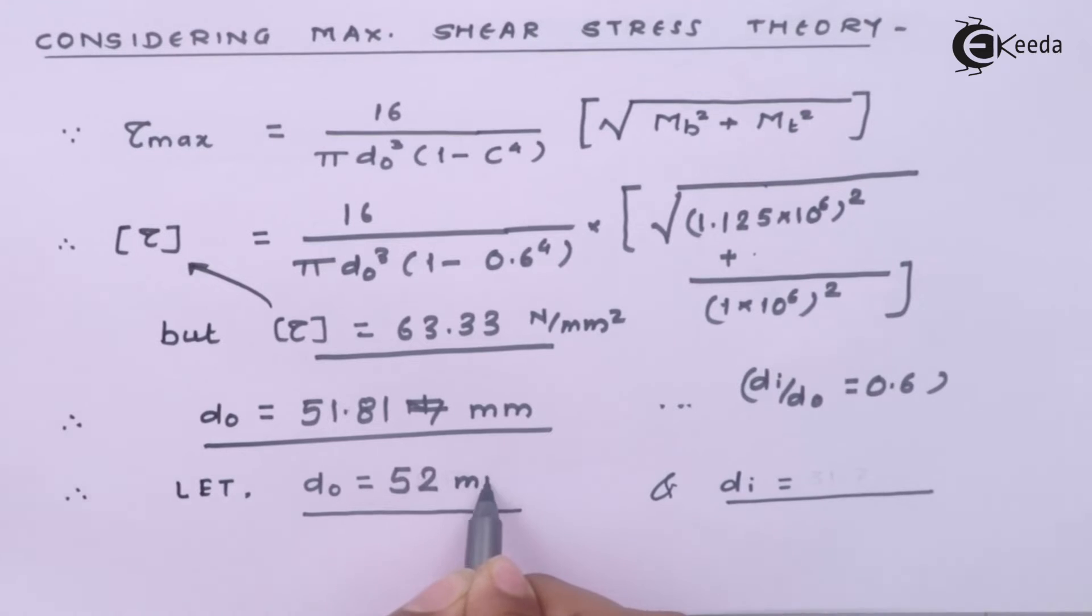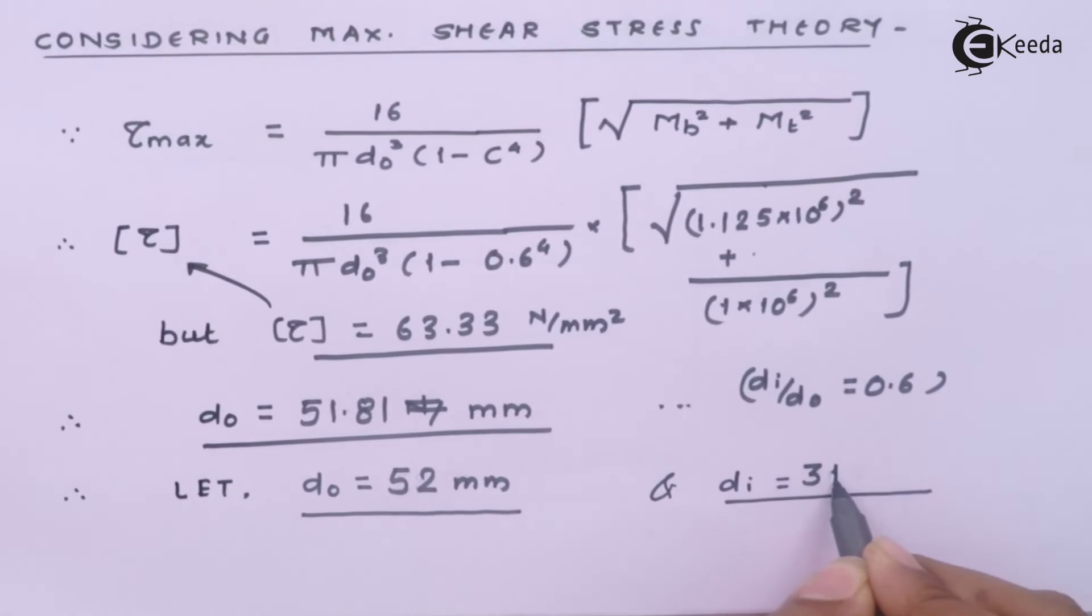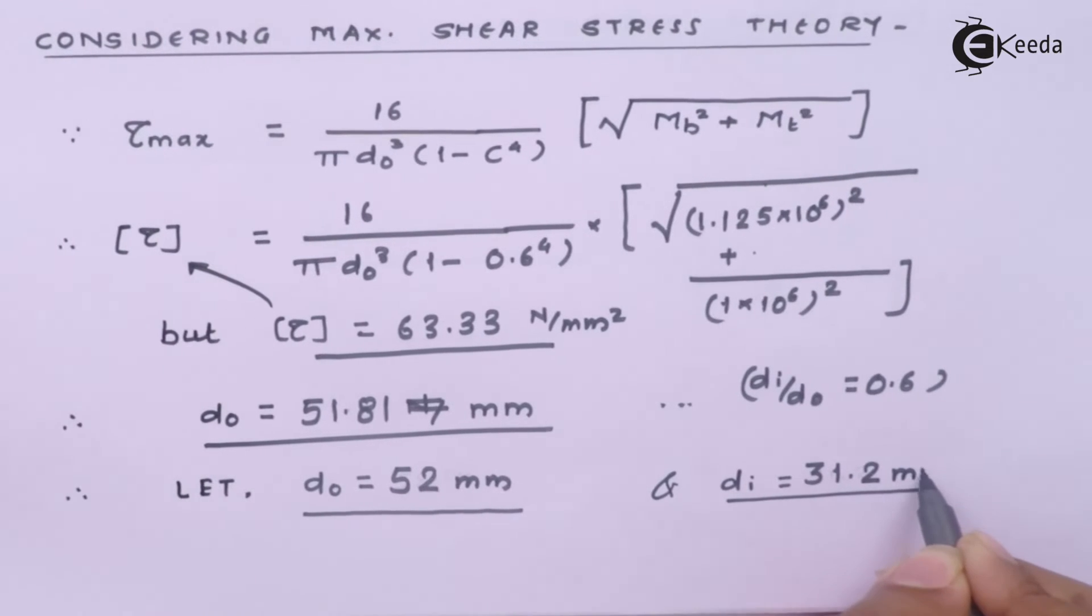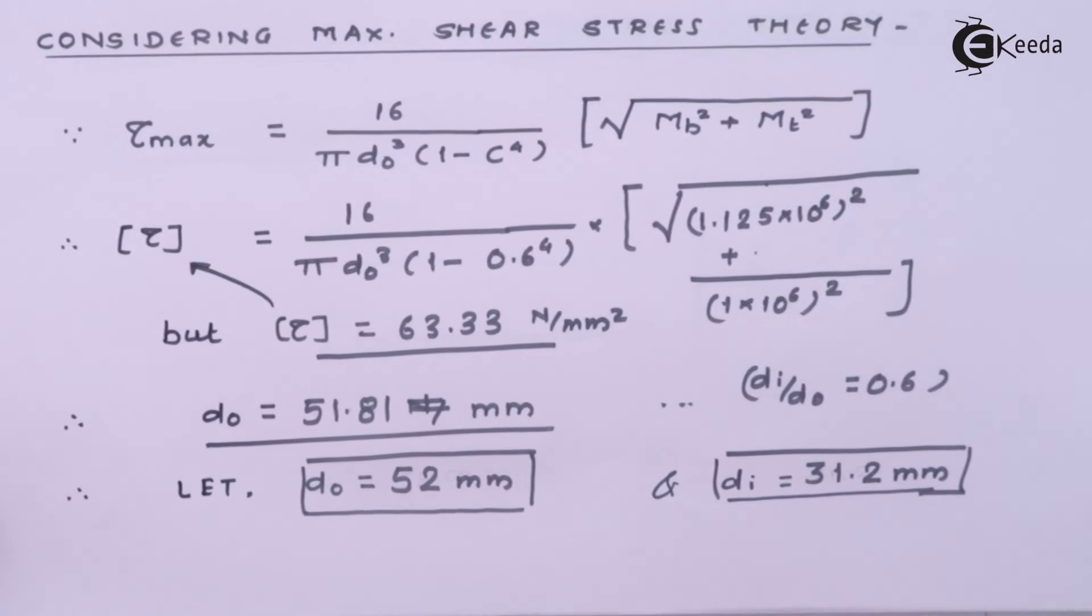If we substitute it back we will get the value somewhere around 31.2 mm for the inner diameter. So that is what the calculation part is all about.